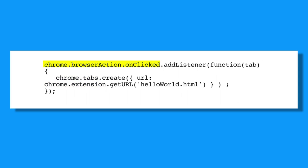Chrome.browseraction.onClicked is an event which can register listeners who act on something interesting that happens — in this case, the user clicking the browser action icon. Most modules expose events, and they all have the same form, which allows for the addition and removal of listeners.